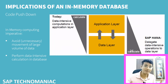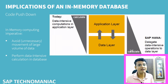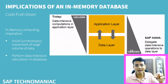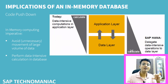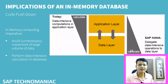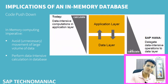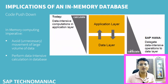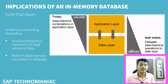After doing all those things at the database, get the final result, come to the application server, do fine-tuning, and display the output. Previously we did everything at the application layer; now we do it at the database layer. The second key point is to avoid unnecessary movement of large volumes of data.